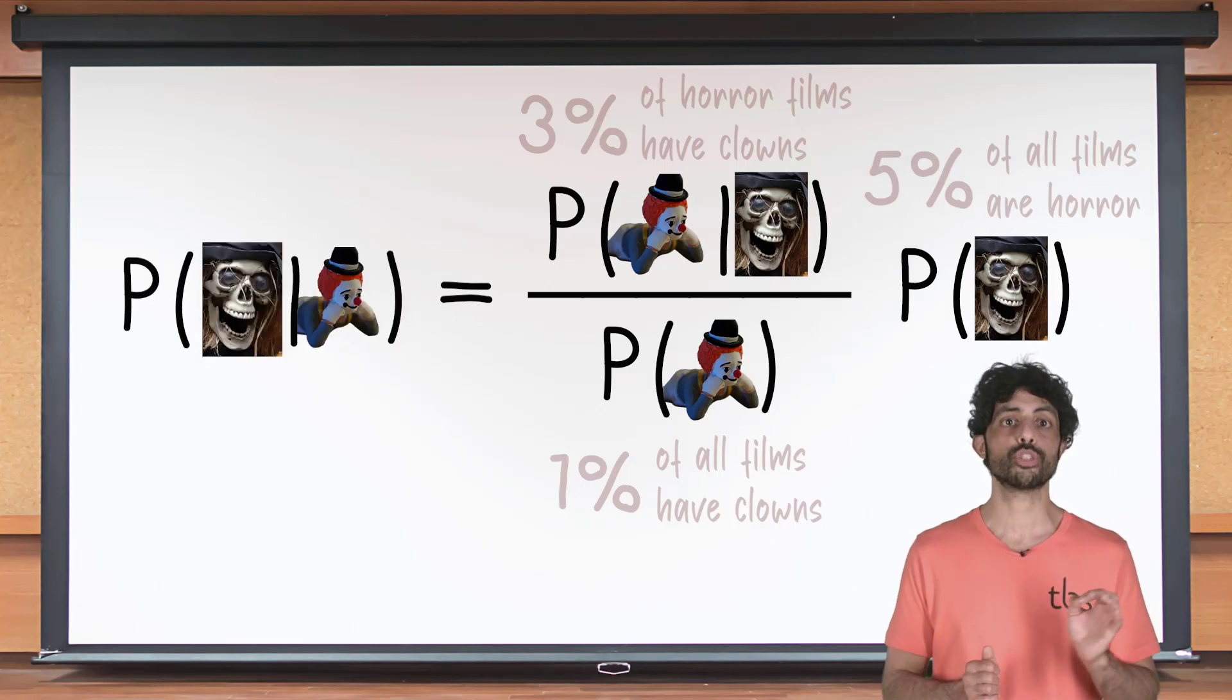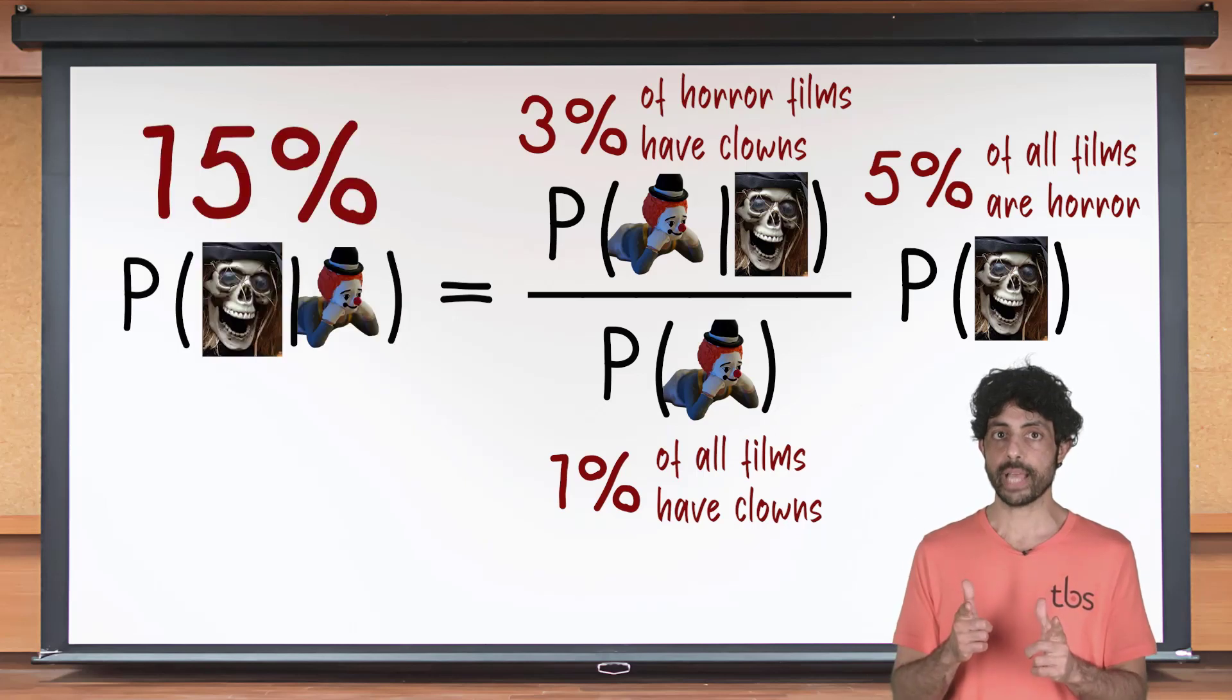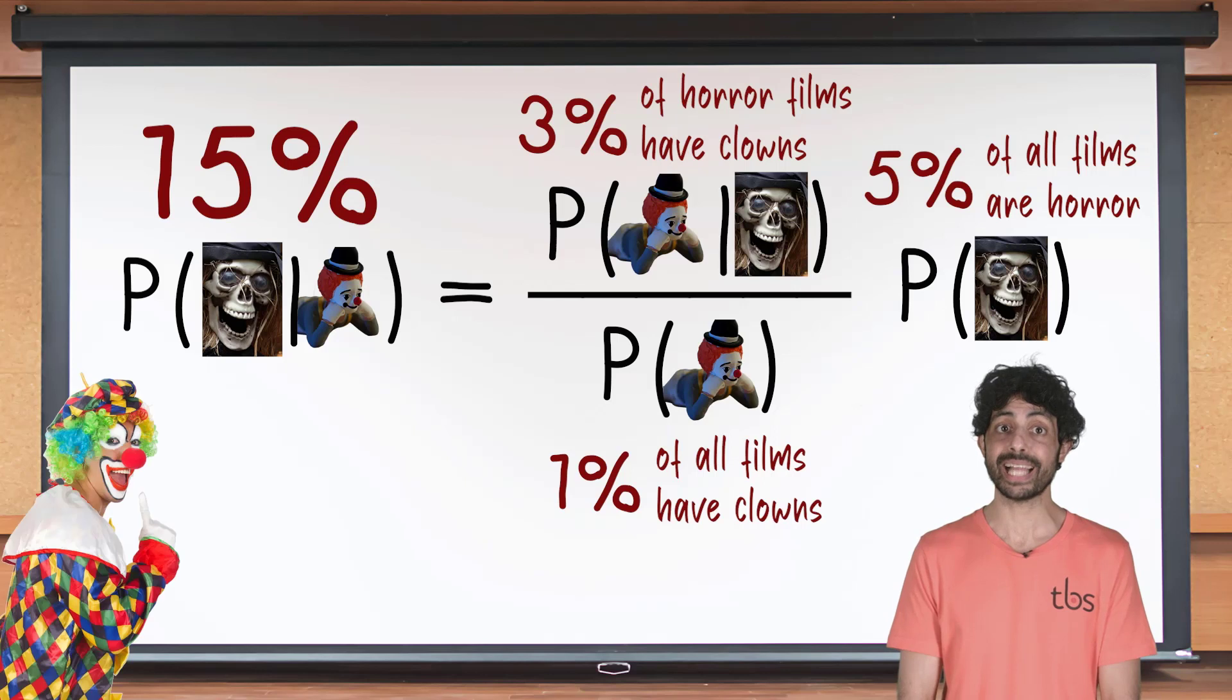So the conditional probability of a film being horror if it has a clown in it equals three percent divided by one percent times five percent, which is fifteen percent.